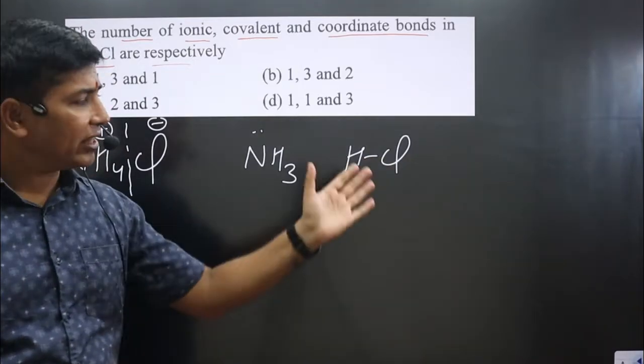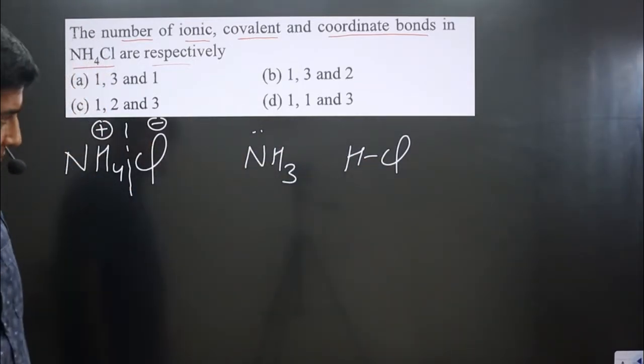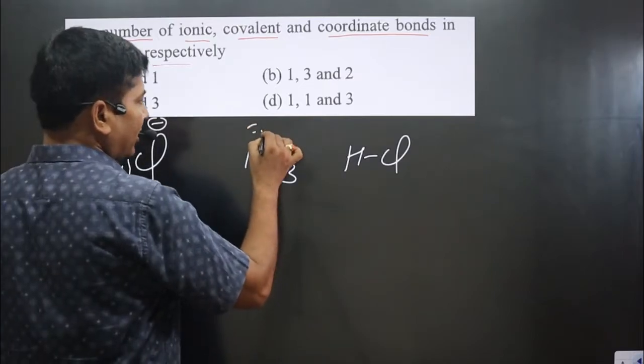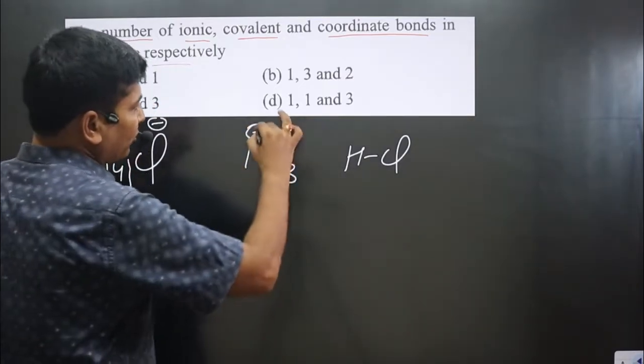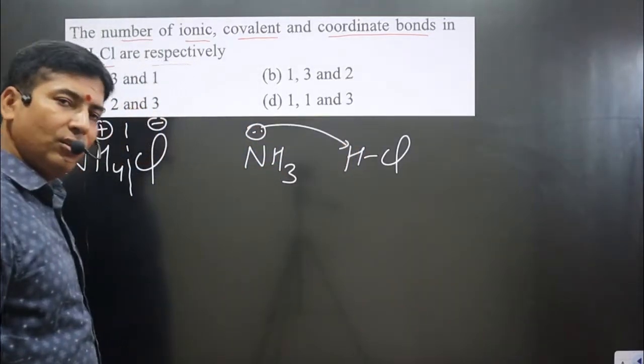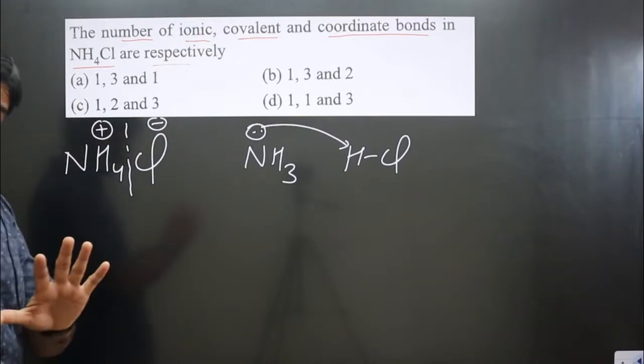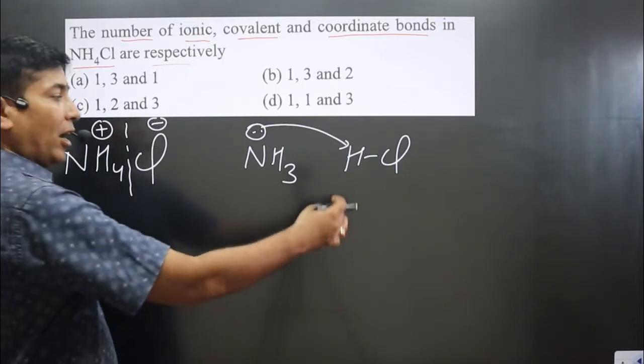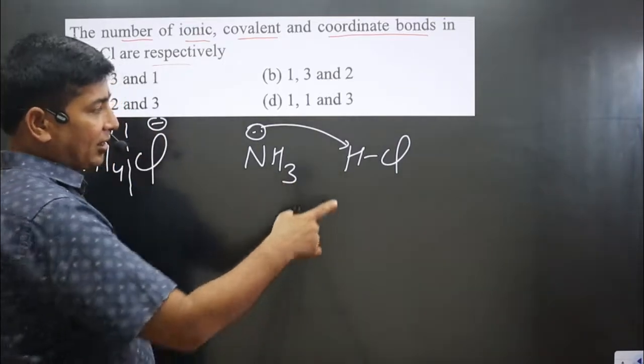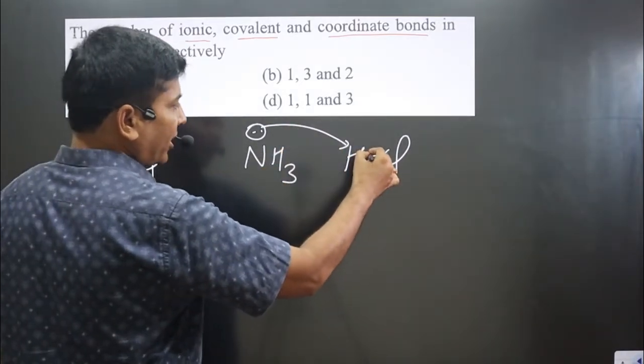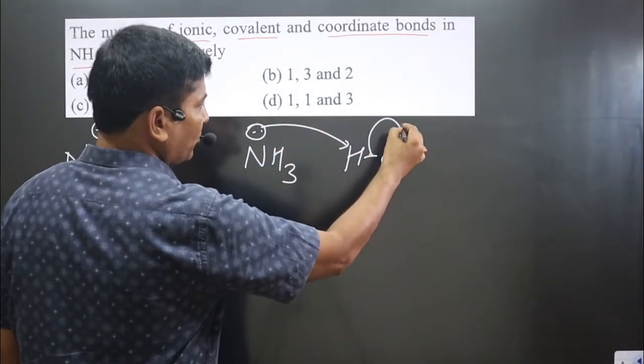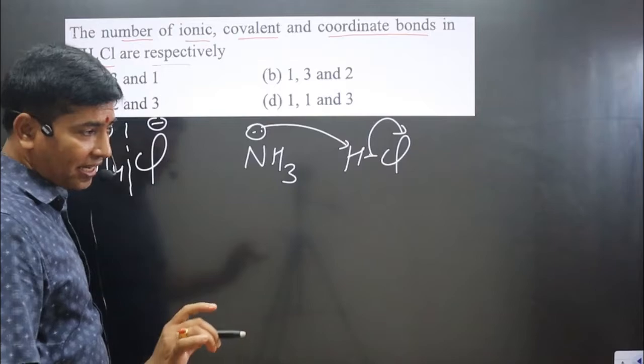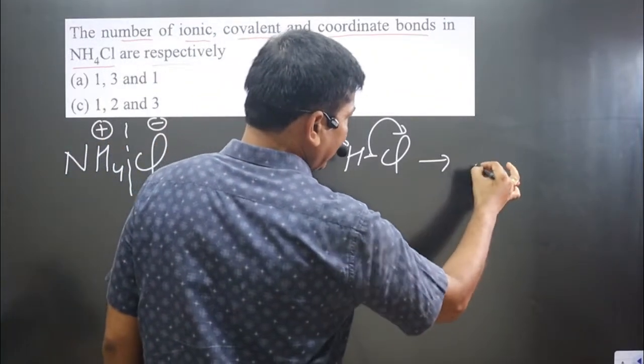Since hydrogen is electron deficient, nitrogen will donate electron density to hydrogen. Hydrogen can form only one bond, and since it is forming a new bond, it will break its existing bond. Cl, being more electronegative, will pull the electron density. Now, this nitrogen already has three hydrogens and is attaching with another hydrogen.